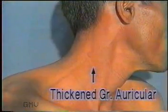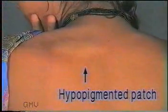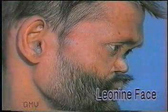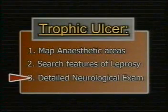Palpate the posterior tibial, ulnar, and greater auricular nerves for thickening as observed in leprosy. Look for hypopigmented anesthetic patches over the limbs, back, and face, and for features of leonine face. If a spinal cord lesion is suspected, test accordingly. Lastly, examine the joints close to the ulcer and test the active and passive movements — restriction of movements indicates muscle or tendon involvement or a painful inflammation.